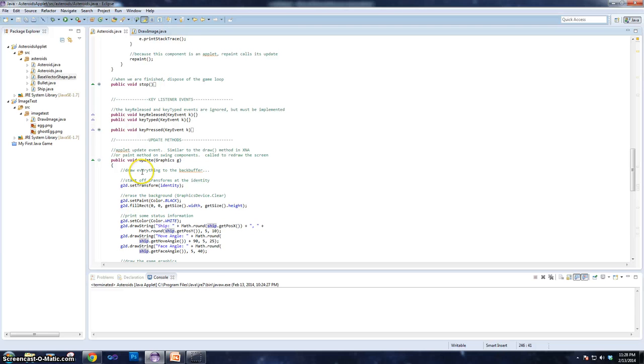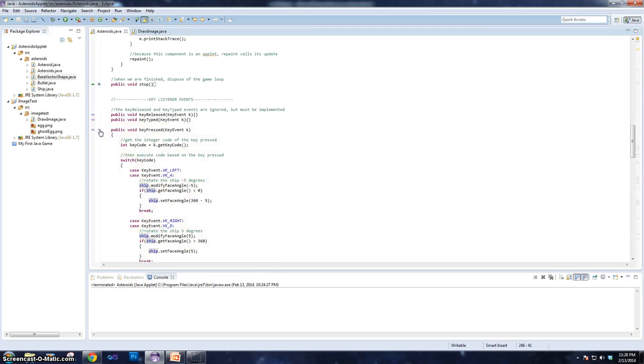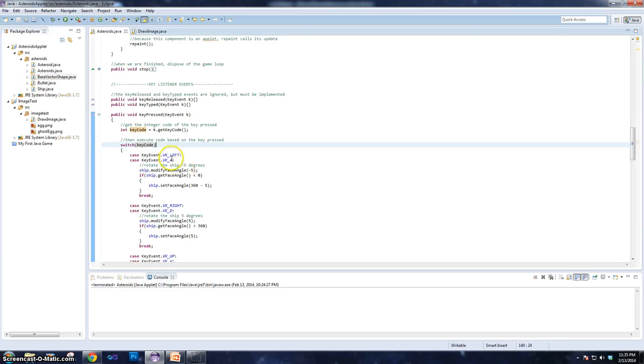Now one other thing I want to talk about here is the key listener events. Now like I said, this is one of the big components of any game. Now what this is going to do is it's going to listen for a key to be pressed. And when that key is pressed, it's going to get the code for that key, and it's going to enter a switch case based on the key code. And then there are different key events that are fired based on the key code.